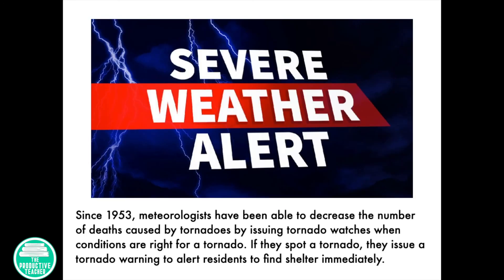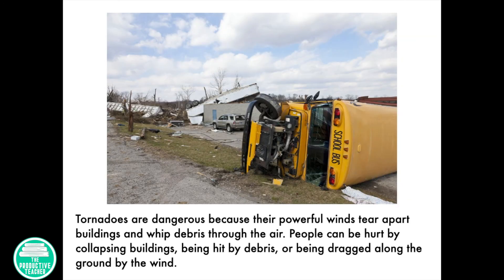Since 1953, meteorologists have been able to decrease the number of deaths caused by tornadoes by issuing tornado watches when conditions are right for a tornado. If they spot a tornado, they issue a tornado warning to alert residents to find shelter immediately. Tornadoes are dangerous because their powerful winds tear apart buildings and whip debris through the air. People can be hurt by collapsing buildings, being hit by debris, or being dragged along the ground by the wind.